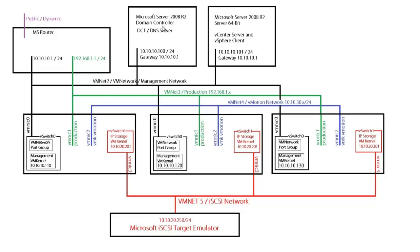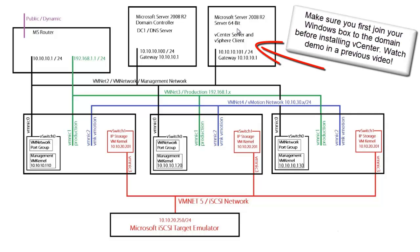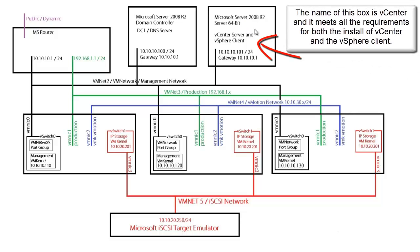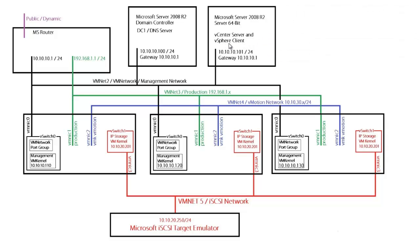What I already have is an active directory domain, which is not required. The name of that domain is itvideocoach.local or itvc.local. It's a domain controller and it has DNS already installed, sitting on the 10-10-10 network. I built a Windows Server 2008 R2 box - you can see how I did this in an earlier video - and I've installed vCenter server and the vSphere client on this box. Before you install vCenter, it's very important that you first join this Windows Server to the domain. I named this Windows box vCenter, and I made sure it met all the requirements. Then I installed the vSphere client on the same box.